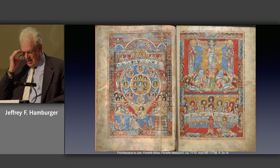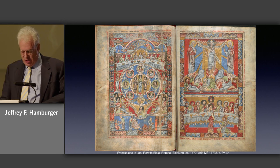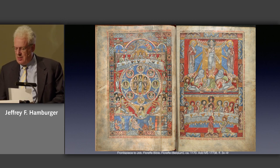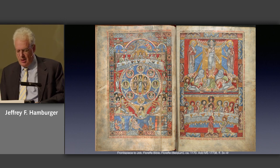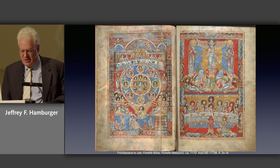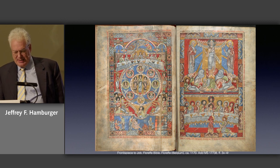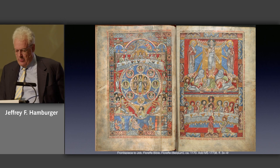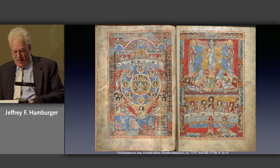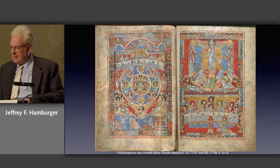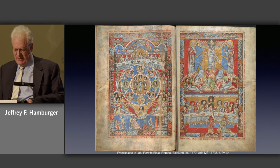Few works of medieval art testify more eloquently to the consummate fusion of complex geometric armatures with a dynamic yet abstract figural style than the frontispiece to the book of Job in the Floreff Bible, illuminated at the Premonstratensian monastery in modern-day Belgium around 1170. Why Job? Because the book of Job falls approximately halfway through a complete Bible in two volumes. The monks of Floreff seized this opportunity to create a programmatic image. We readily recognize the page on the right as a depiction of, at the top, the Transfiguration — the moment at which Christ first revealed his divinity to the apostles — and below, the Last Supper.